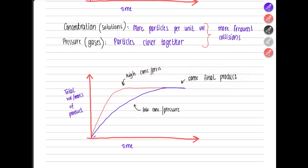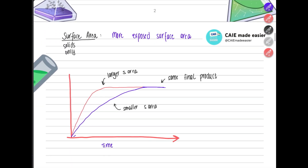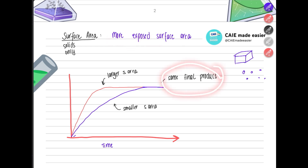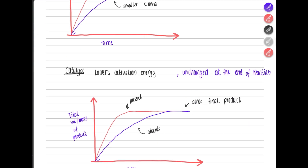Surface area is a factor for solids only. It refers to the exposed surface area available for reaction. For example, small chips of calcium carbonate have more surface area than a large block — the other reactant can collide from many more directions. Greater surface area means a higher rate of reaction, though the final amount of product remains the same.